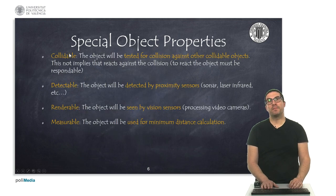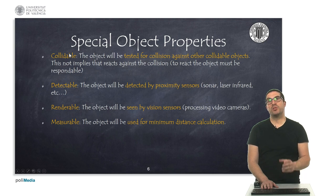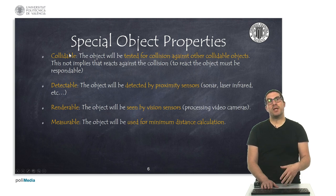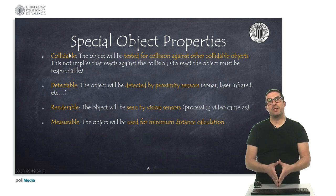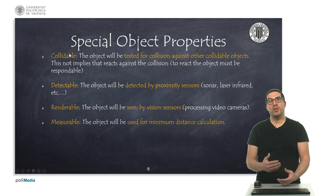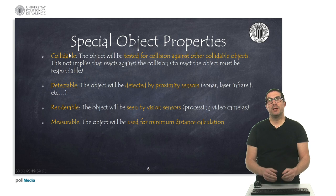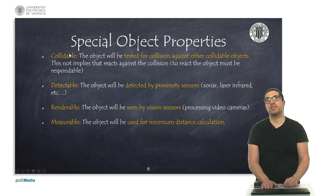Also, objects have special properties, and these properties are very important in order to control the way we execute our simulation. Specifically, the most relevant properties are the callable property, which means that if we activate this property, then an object with this property active will enter into a list of objects that can collide, which means that it will be used in order to detect possible collisions with other objects. But it does not imply that they will react. They are basically used for other calculation purposes.